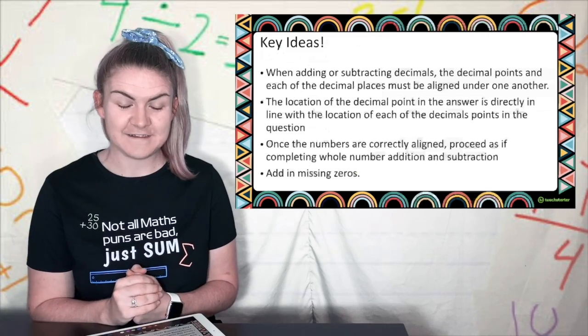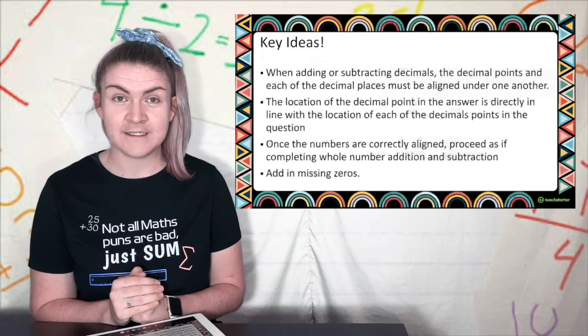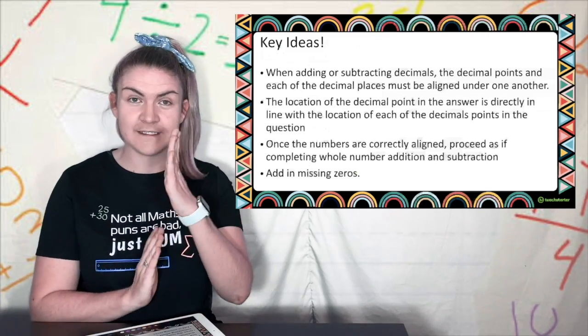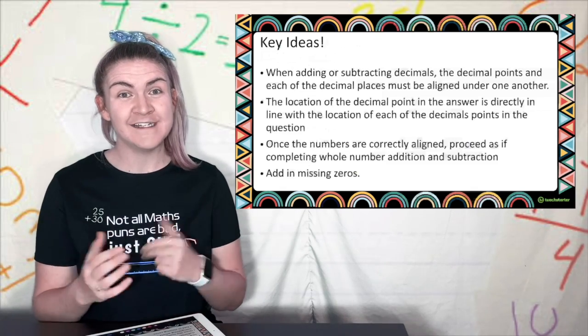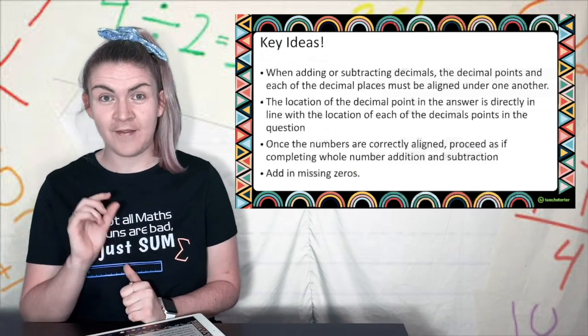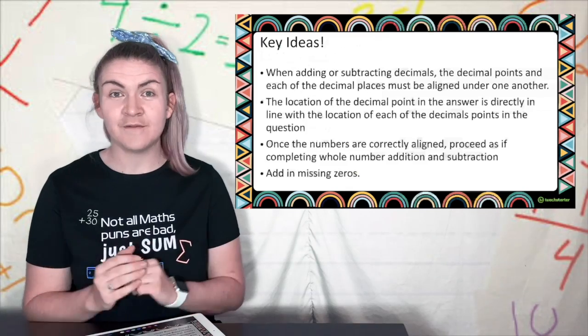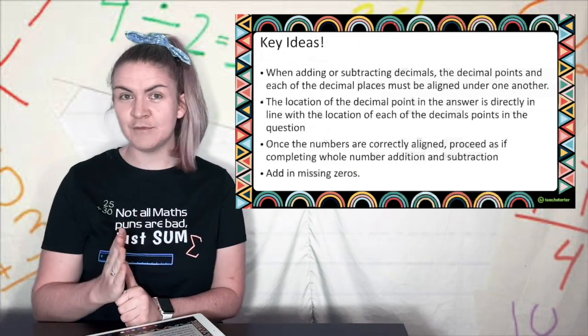Let's go over the key ideas. When we're adding or subtracting decimals just like whole numbers we need to line up the place value. But the pretty easy thing with decimals is that they all have a decimal point. So the easiest way is just to line the decimals up in a row.